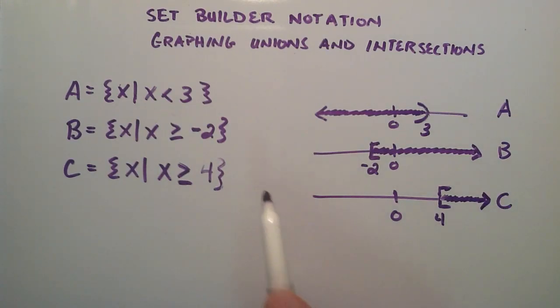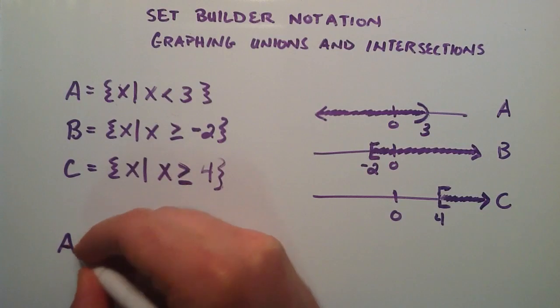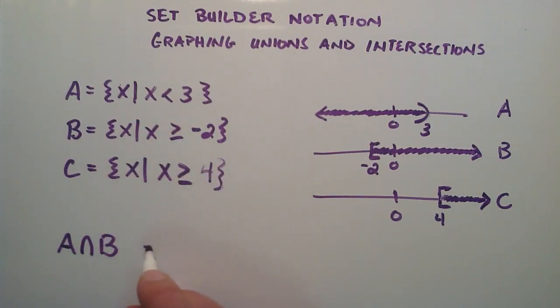Now that we've represented each of these sets on a number line, let's start taking intersections and unions of these sets. If we wanted to do A intersect B, we can go ahead and graph that on a number line.